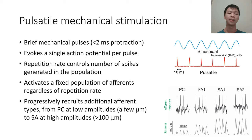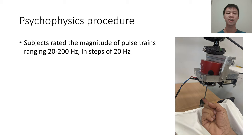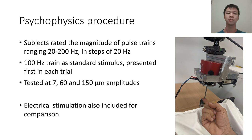We delivered these pulsatile stimuli using a probe attached to a mechanical shaker. Subjects had to rate the magnitude of pulse trains between 20 and 200 Hz against a standard, which was the 100 Hz pulse train. We tested three different stimulation amplitudes, which would recruit a different combination of afferent types.